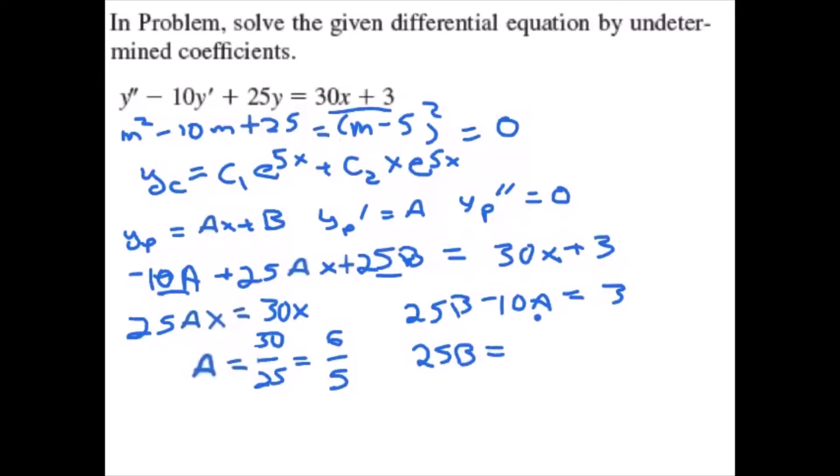25b equals 10 times 6 fifths, which is going to be 12. Moving on to the other side gives us a positive 15. So b is 3 fifths.